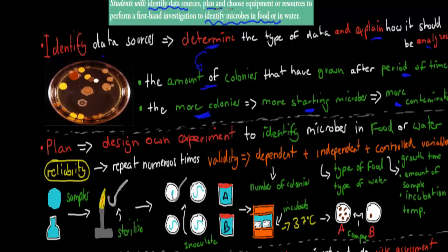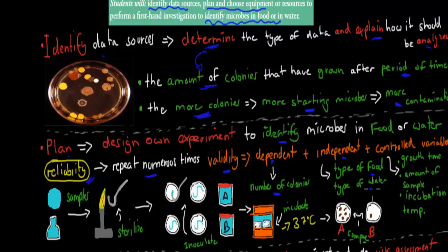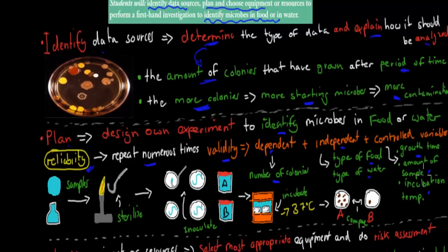It says 'plan and choose equipment.' You should have designed your own experiment to identify microbes in food or water. Plan relates to reliability — you should repeat the experiment numerous times. Validity means making sure your procedure is correct. The dependent variable is what you measure — the number of colonies. The independent variable is what you change — for example, different types of food or water samples. Control variables are things kept the same: how long they are left to grow, the amount of sample in each agar plate, and the incubation temperature — 37 degrees Celsius for all agar plates.